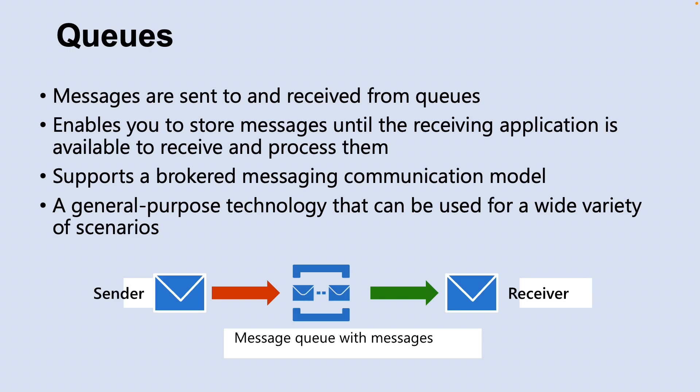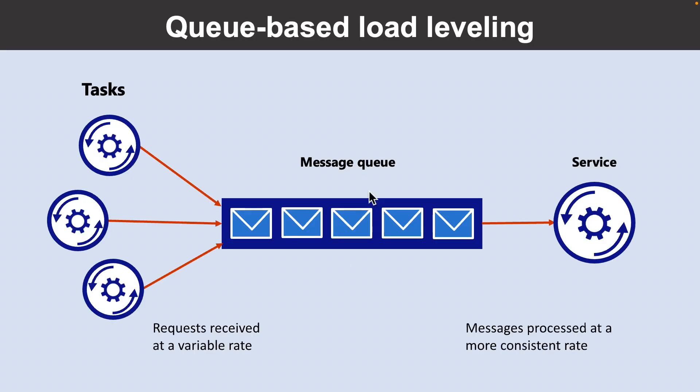Furthermore, the producer does not have to wait for a reply from the consumer in order to continue to process and send messages. You can use a queue that acts as a buffer between a task and the service it invokes, to smooth intermittent heavy loads that can cause the service to fail or a task to time out. This helps minimize the impact of peaks in demand on availability and responsiveness for both the task and the service.